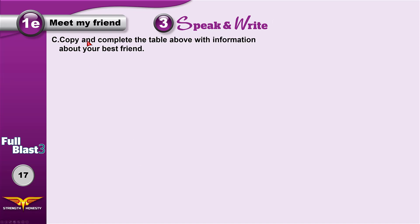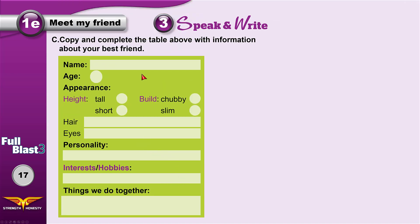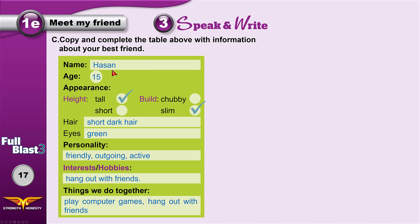Now copy and complete the table with information about your own best friend. For example: his name is Hassan, he is 15. He is tall and slim. He's got short dark hair and green eyes. He is friendly, outgoing, and active. Hassan and I play computer games and hang out with friends.